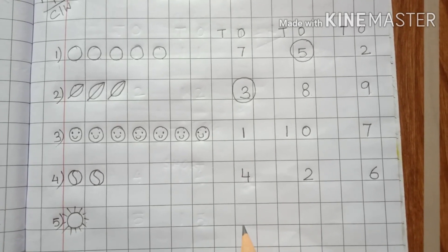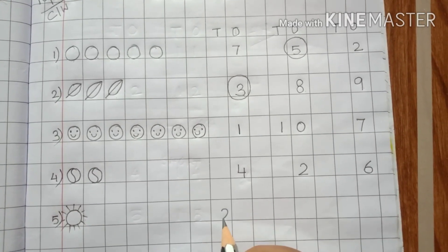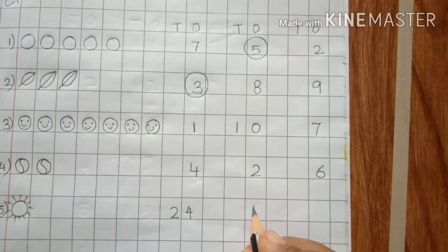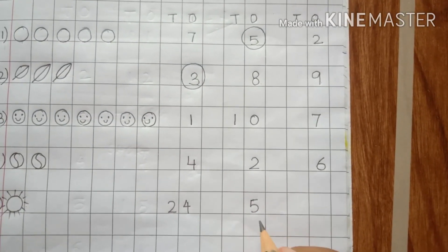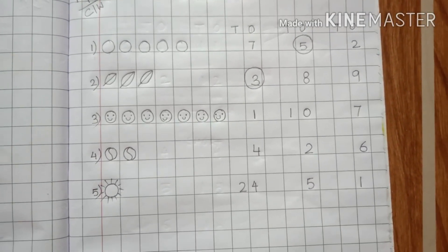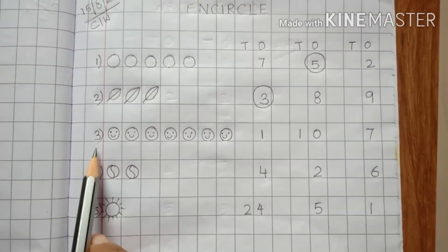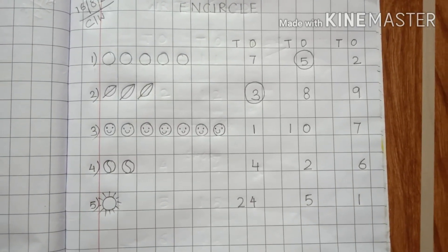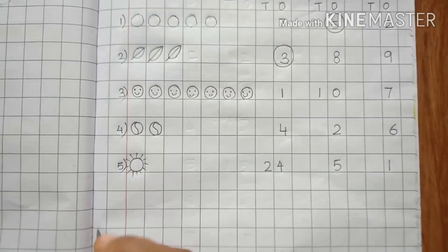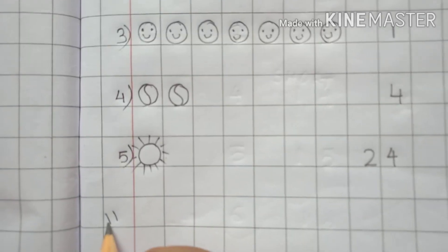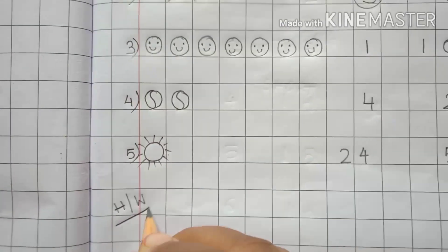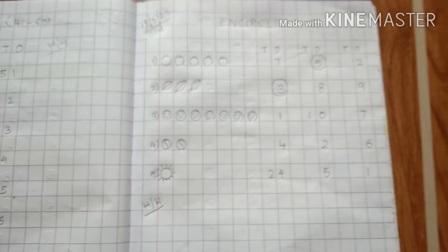So following the same line, we will write here 2, 4, 24. Then 5. Then 1. So you have to do this 3, 4, and 5 by yourself in your copy. And then you can draw any other images like this and do it in homework.